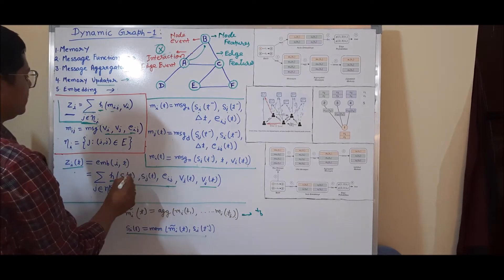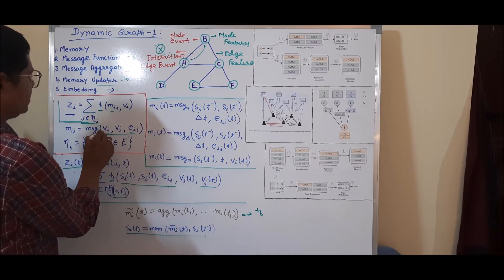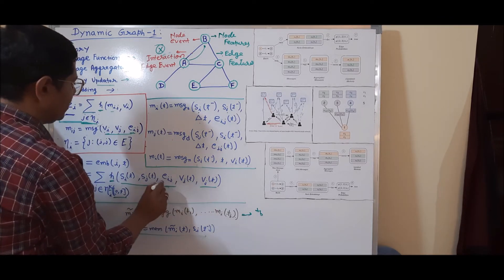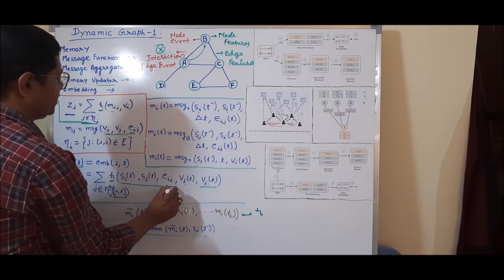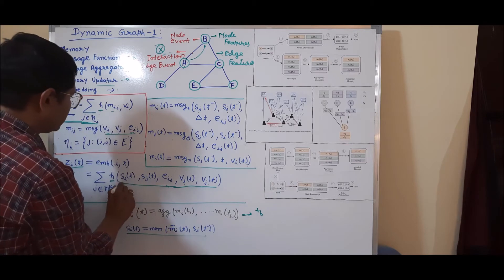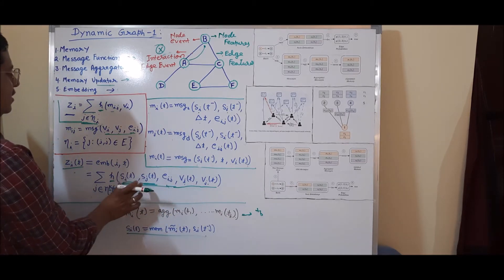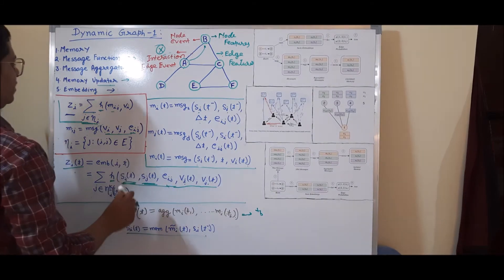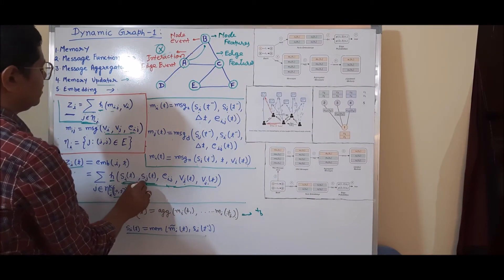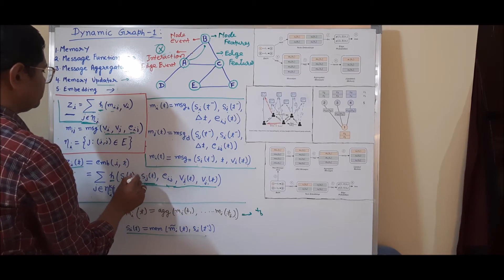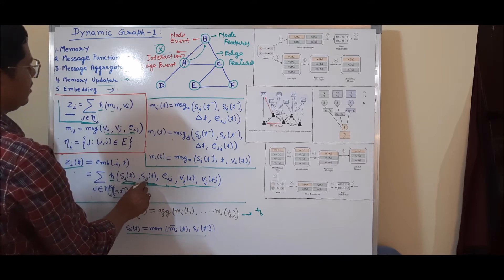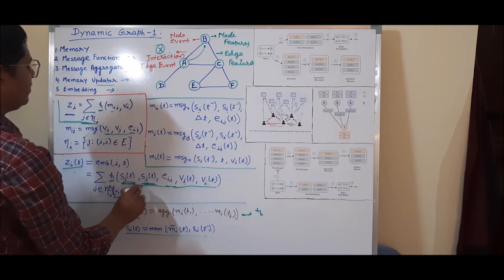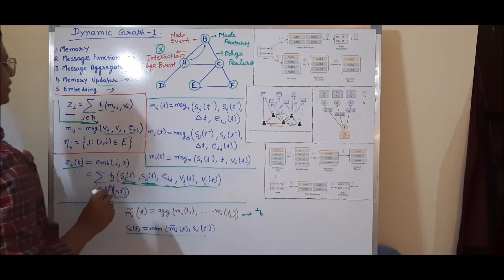The message part generally in the static case contains two nodes and edges. Here, nodes v_i, v_j and edge e_i are present, but additionally we have two extra pieces of information coming from the updated memory — that is, updated information about node interaction and node events for node i and node j at a given time t. So these are the key differences achieved here.